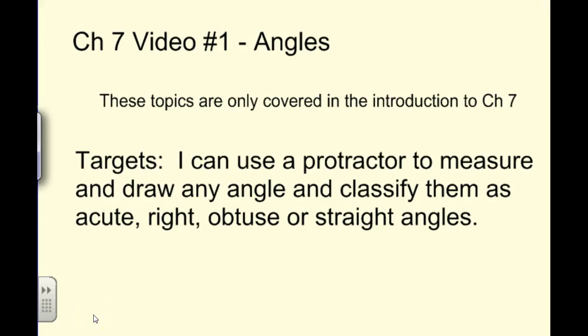So this is the first video for chapter 7, and in this section we're going to review probably a lot of stuff you already know about angles, things you learned last year, and stuff they expect you to know as we start chapter 7. So in this video we're going to use a protractor to measure and draw any angle, and then classify it as what type of angle it is. Is it acute, right, obtuse, or straight? So you probably remember some of those words.